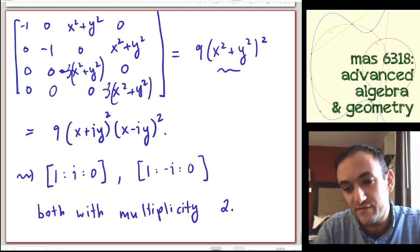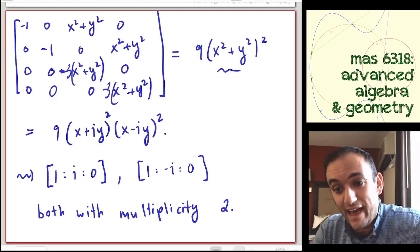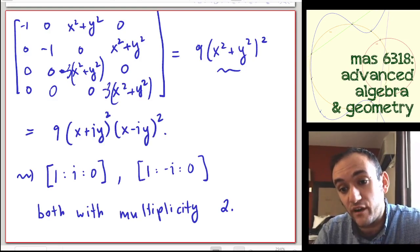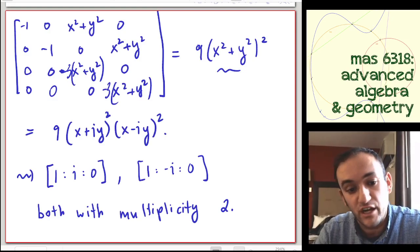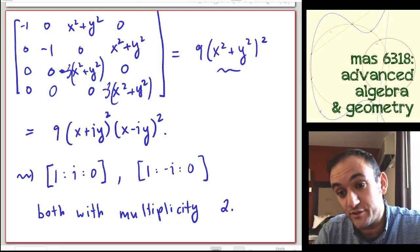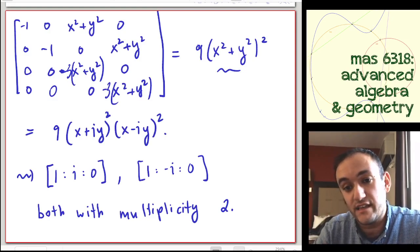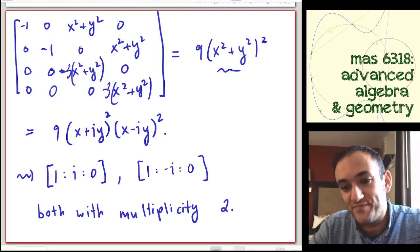So this has given you an introduction to what a resultant is, how it can be used to see when two polynomials in one variable have a common root, and how you can extend that to multiple variables to look at how it works in projective geometry and how it gives you intersection multiplicity. We'll wrap this all up into a package in the next lecture with a summary of Bezout's theorem and some ways to apply it. Thanks.